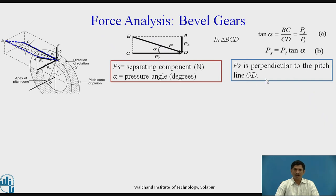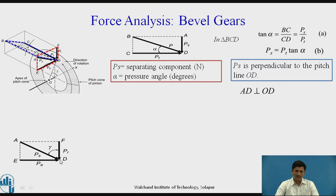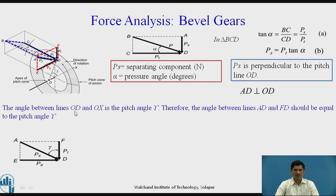PS is perpendicular to the pitch line OD and is the separating force acting along AD. Now considering the plane shown in red color in its 2D view, PS is acting along AD and this angle is gamma. We resolve this force into two components: PR, the radial force directed towards the center, and PA, the axial force along the axis of the shaft of the gear. The angle between lines OD and OX is gamma, and therefore the angle between lines AD and FD is also equal to the pitch angle gamma.